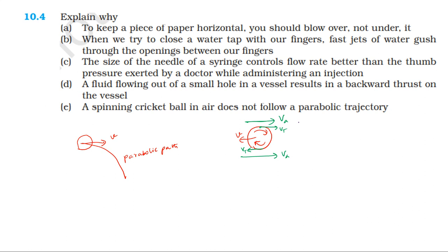For a spinning ball, the velocity at the topmost point is in the same direction as the tangential velocity of the ball's spin, so the net velocity at the top is higher. At the bottom, the spin velocity is in the opposite direction, so the net velocity at the bottom is lower.